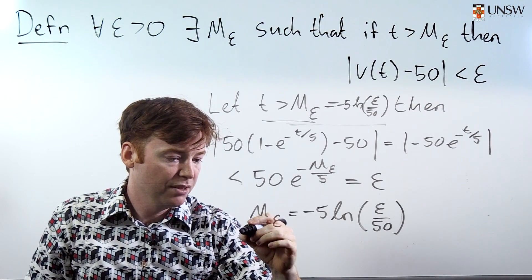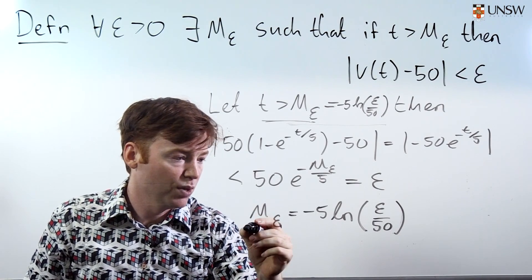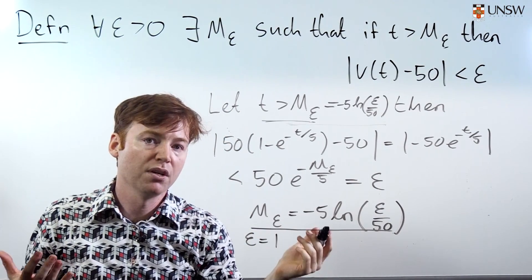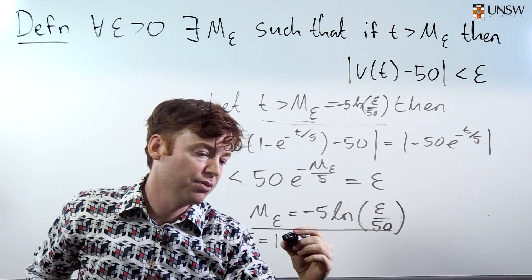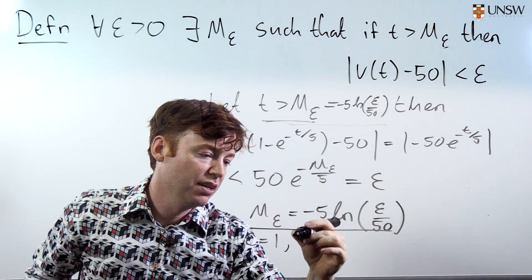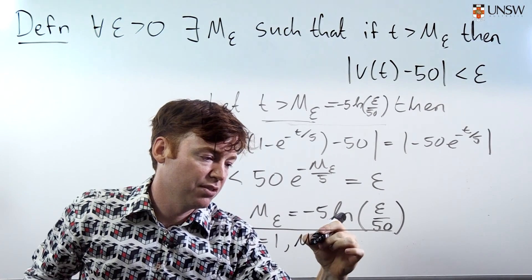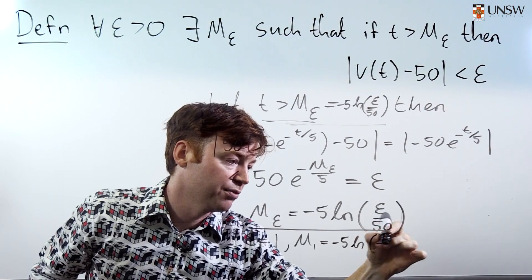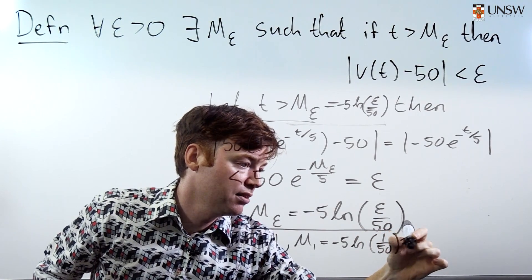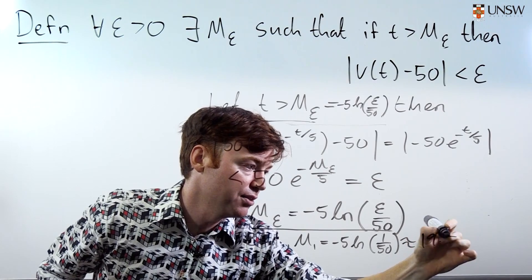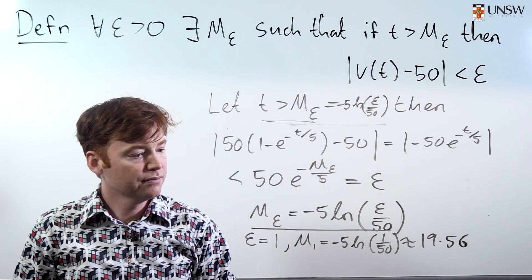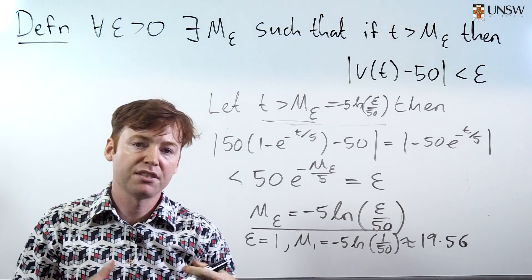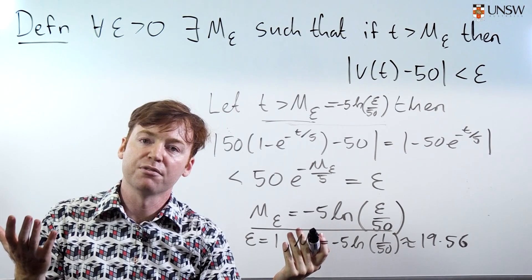So we've done this for every possible value of epsilon. Let's just see what happens if we choose, say, epsilon to be equal to one. So if epsilon is equal to one, we want to know when is the function within one of its limiting value. Well, we just need to know what M epsilon is. So M one is negative five LN of one over 50, which is about 19.56. So for t values bigger than 19.56, the function is within one of 50.